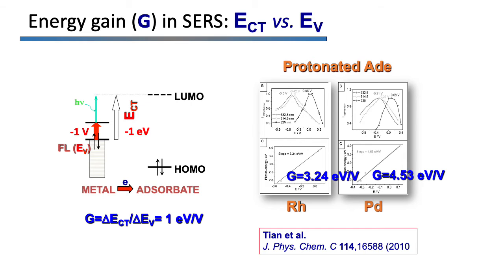This energy gain is very dependent on the particular molecule and the experimental conditions, but large values are obtained in many cases. For instance, the group of Tian studied the SERS of protonated adenine recorded on rhodium and palladium electrodes with three different excitation laser lines and found very large energy gains. This means that one applied volt shifts the energy of the CT states by 3 to 4 electron volts.